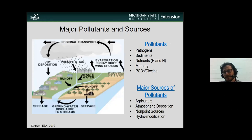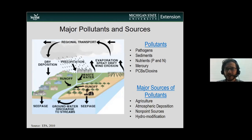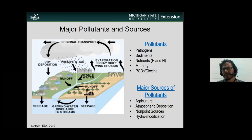A study done by the EPA published in 2010 looked at some of the major pollutants in our lakes, reservoirs, and rivers throughout the United States. Some of them are not very surprising — we see these here in Michigan as well. So pathogens like E. coli and fecal coliform, sediments — which we often don't think of as a pollutant but actually is a major problem — nutrients, mostly nitrogen and phosphorus, and then more industrial and legacy contaminants like mercury, PCBs, and dioxins.